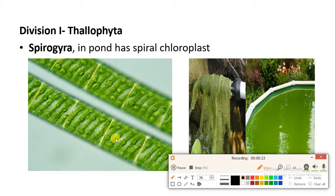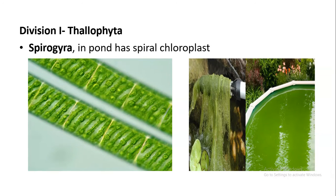The most important thing about Spirogyra is that it has chloroplast present, and it is in a spiral shape, which can be seen when we look under the compound microscope.